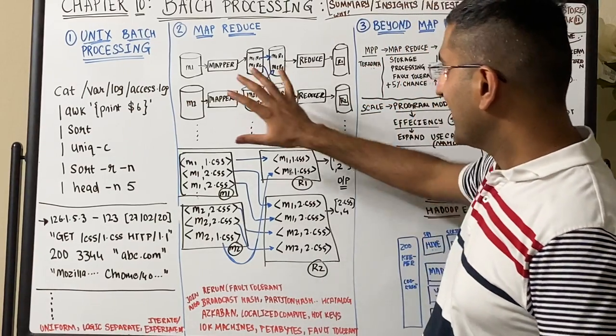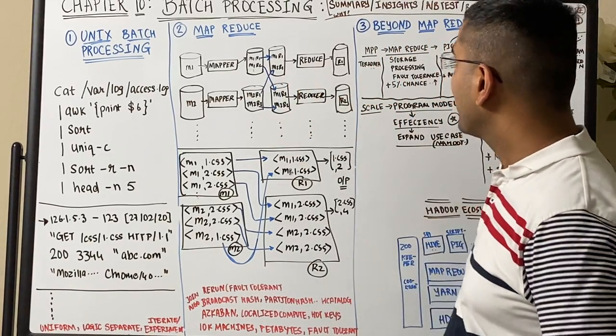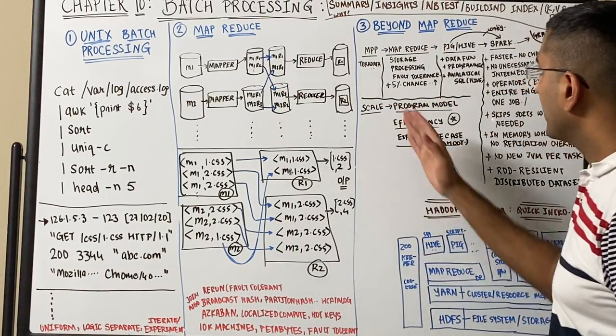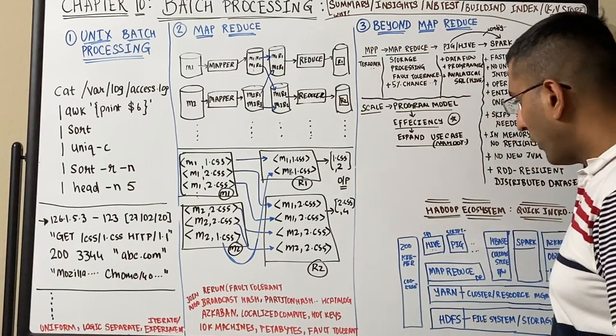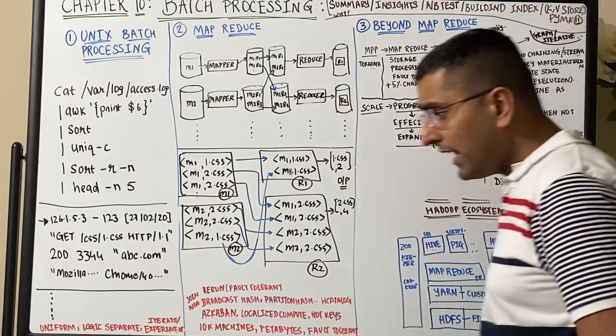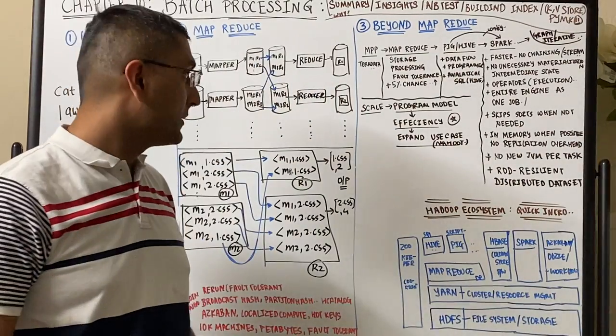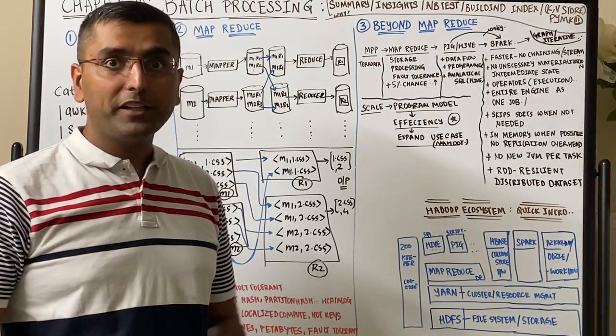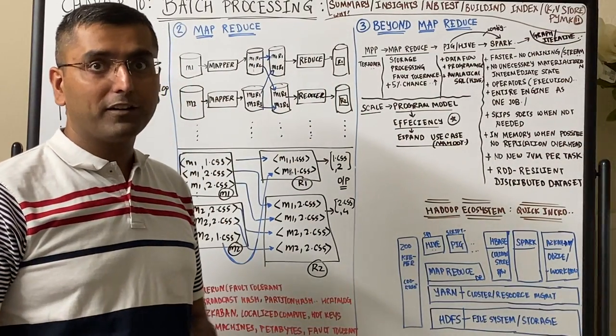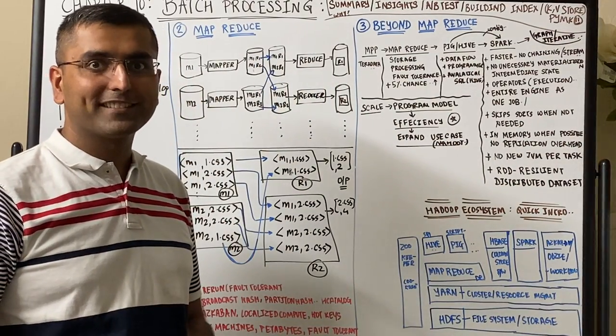This was quite insightful — the system has its roots in Unix as the key inspiration, which is a fascinating point in this chapter. We looked at a MapReduce example, how it evolved, and a quick overview of the Hadoop ecosystem. In the next video, we'll learn about streams.